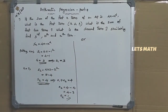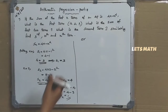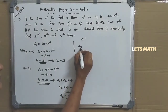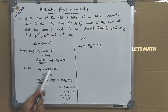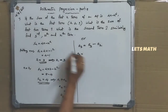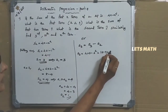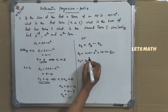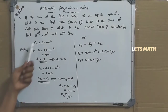The same question can be done another way. Third term can be written as sum of first three terms minus sum of first two terms. S2 is already found as 4. S3 is found by putting N equal to 3: 4 into 3 minus 9 equal to 3. So A3 equals S3 minus S2 equals 3 minus 4 equal to negative 1.